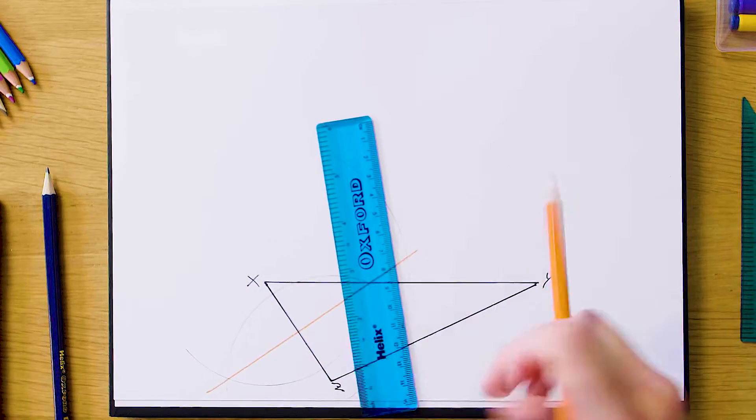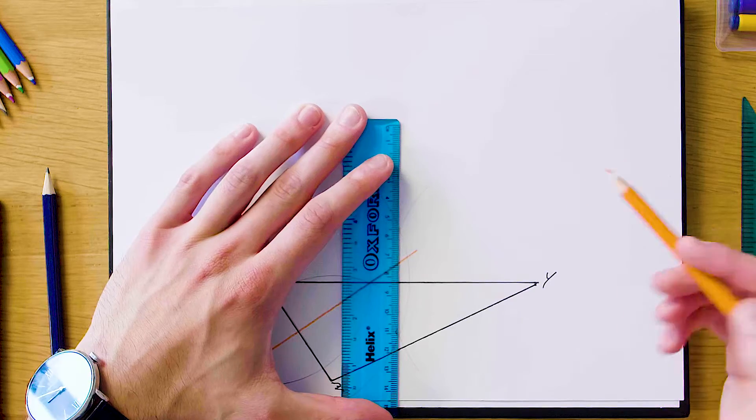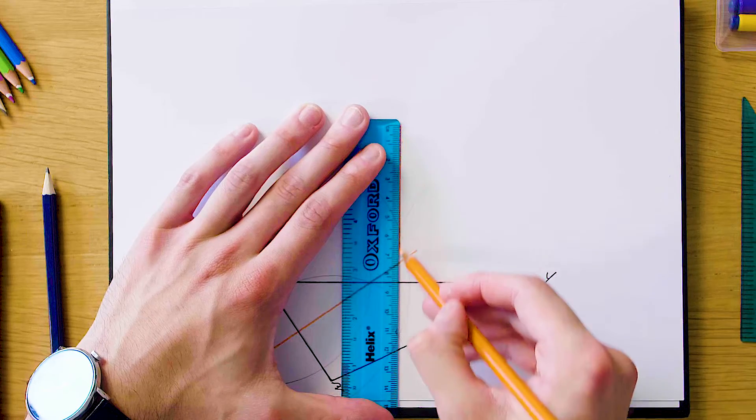And once again, we're going to take our ruler and join these two overlapping points here so that we have a nice orange line which will signify our bisector.